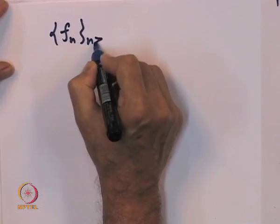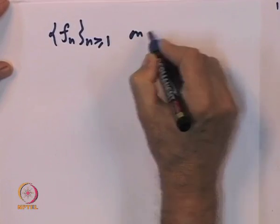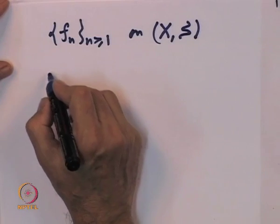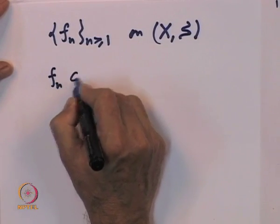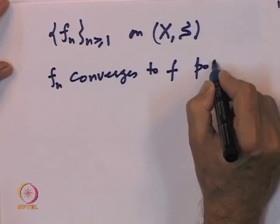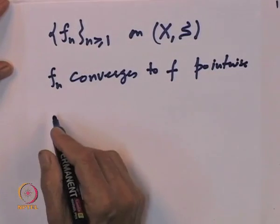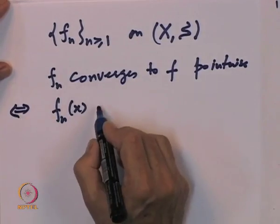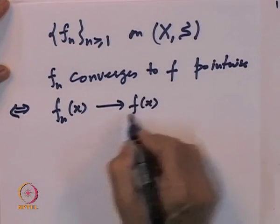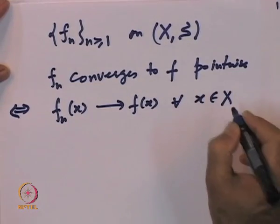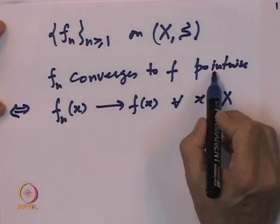Let us take a sequence of functions F_n. It is a sequence of functions on a measurable space X, S. Saying that F_n converges to F pointwise means that F_n(x) converges to F(x). These are numbers, for every x belonging to X. So this is converging pointwise.